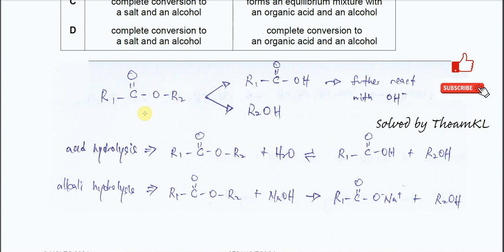It starts with the ester. Let's say we have this ester with two alkyl groups — alkyl group 1 and alkyl group 2. After it's hydrolyzed, the ester bond will break: the C=O part will form COOH, and this part will form alcohol — this oxygen will get one H, so it will get OH. So it will form these two products: the carboxylic acid and alcohol.